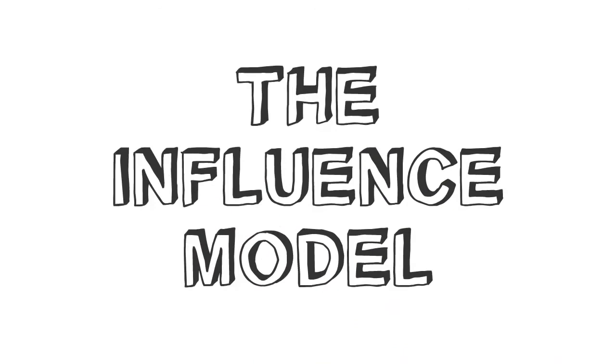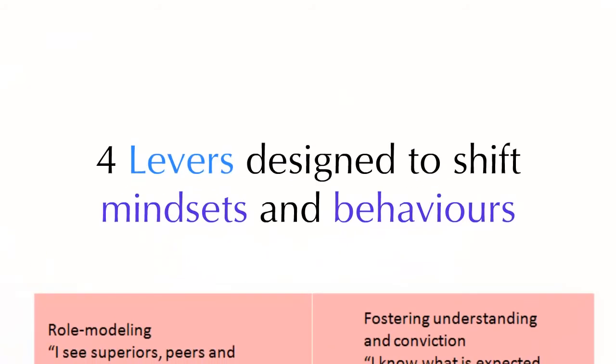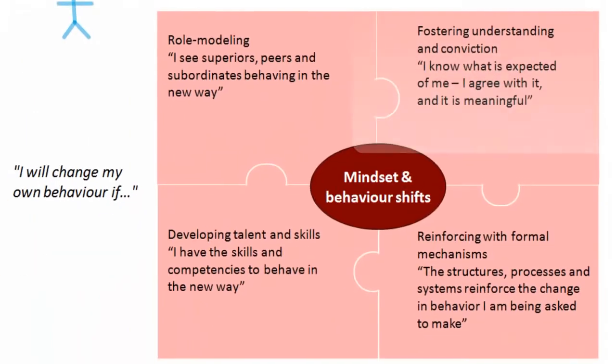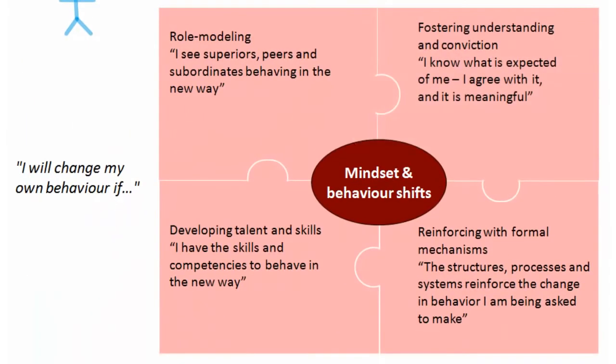The influence model is a really useful model for thinking about ways in which change can be encouraged. It's essentially four levers that are designed to shift mindsets and behaviours. These are role modelling, fostering understanding and conviction, developing talent and skills, and reinforcing the formal mechanisms. I'll change my behaviour if I see superiors, peers and subordinates behaving in the new way, if I know what's expected of me and I agree with it and it's meaningful, if I have the skills and competencies to behave in the new way, and if the structures, processes and systems reinforce the change of behaviour that I'm being asked to make.